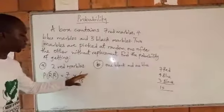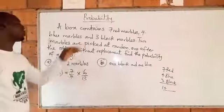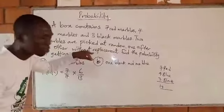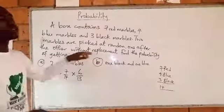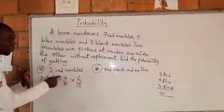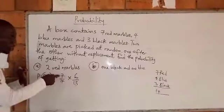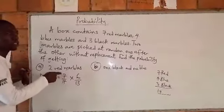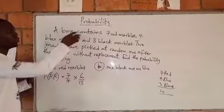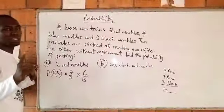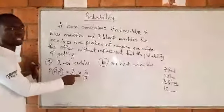How do we arrive at this? The question says one after the other without replacement. The first pick is assumed to be red. We have already gotten 7 reds in the box. That means it will remain 6 since we have picked one already.